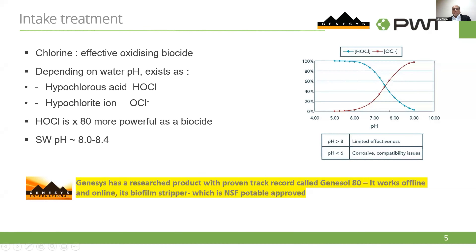Seawater is almost around pH 8 to 8.4, so the effectiveness of chlorine is not that great. Chlorination is okay, but continuous chlorination is not recommended. Genesis has a product in their portfolio with a proven track record called Genesol 80. It can work online and offline as a biofilm stripper. You may have high bacterial density, but when biofilm is formed on the membrane and is very hard to remove, Genesol 80 can do it.